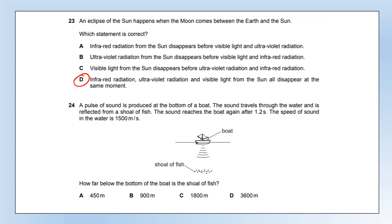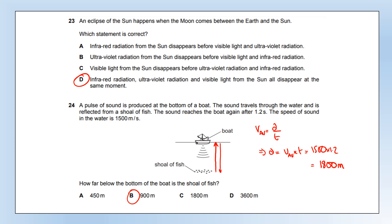A pulse of sound is produced at the bottom of a boat, travels through water, and is reflected from a shoal of fish. The sound returns after 1.2 seconds. The speed of sound in water is 1,500 m/s. Using distance = speed × time: 1,500 × 1.2 = 1,800 metres. But the signal has travelled to the fish and back, so we halve it: 1,800 ÷ 2 = 900 metres below the bottom of the boat.